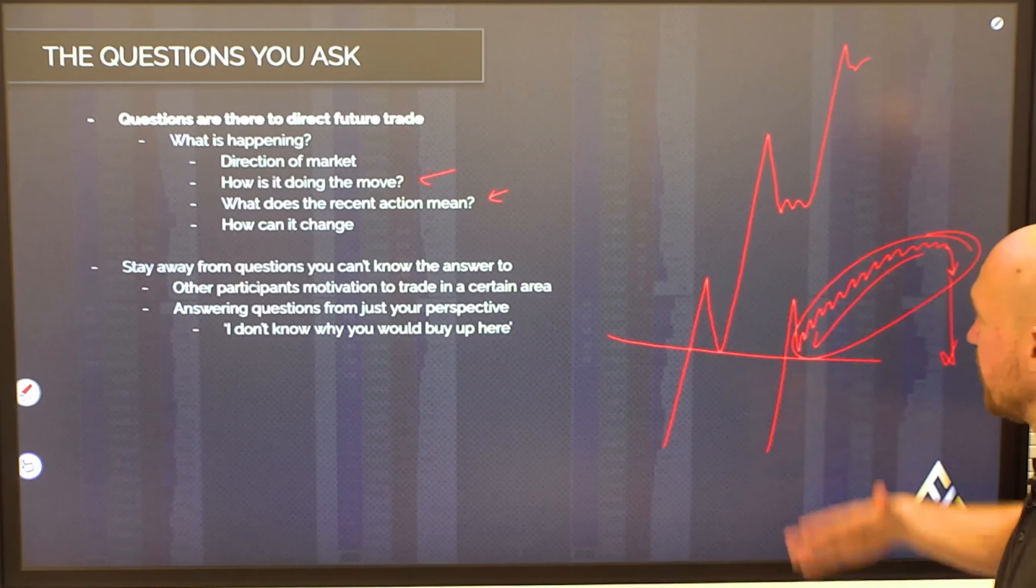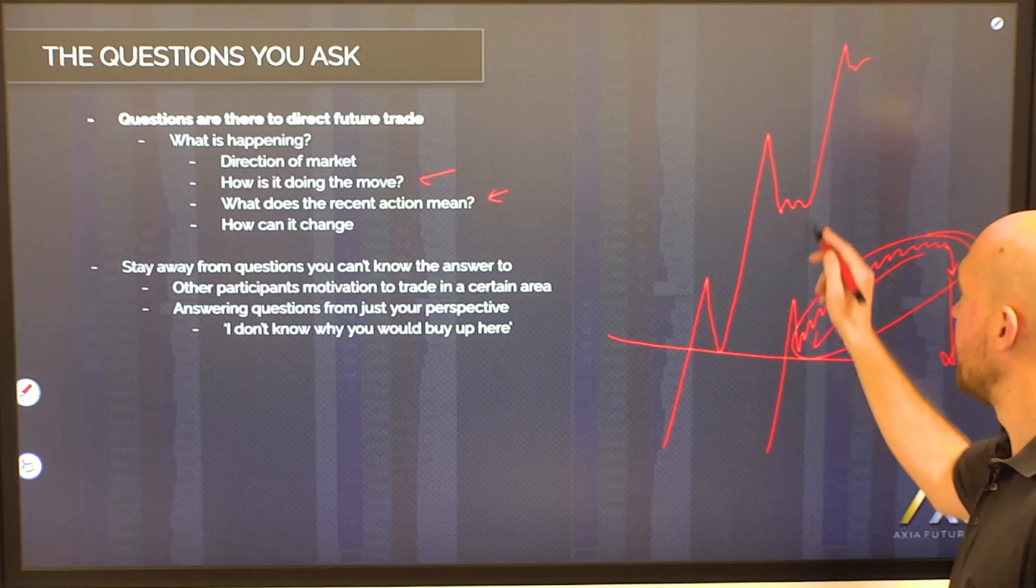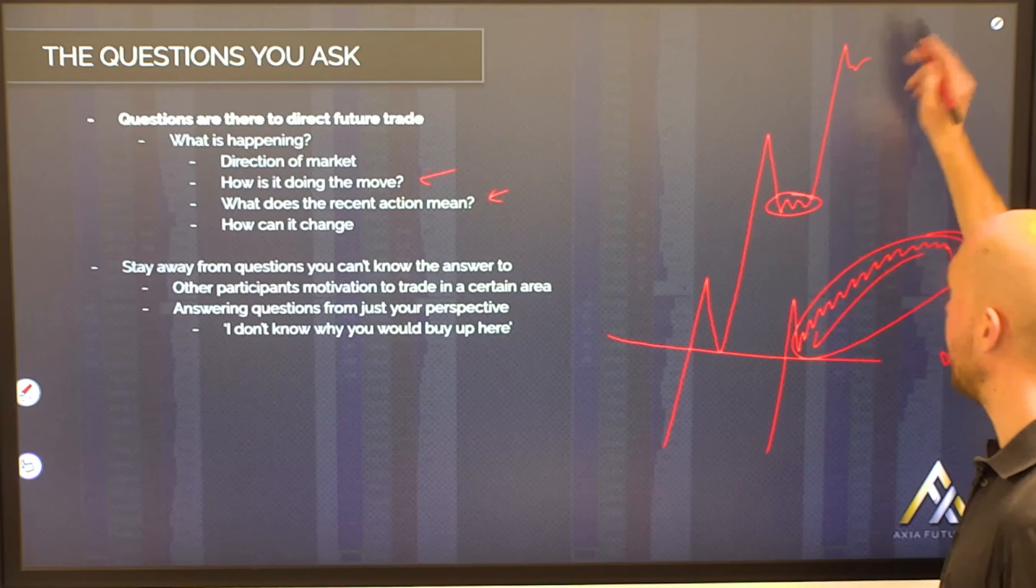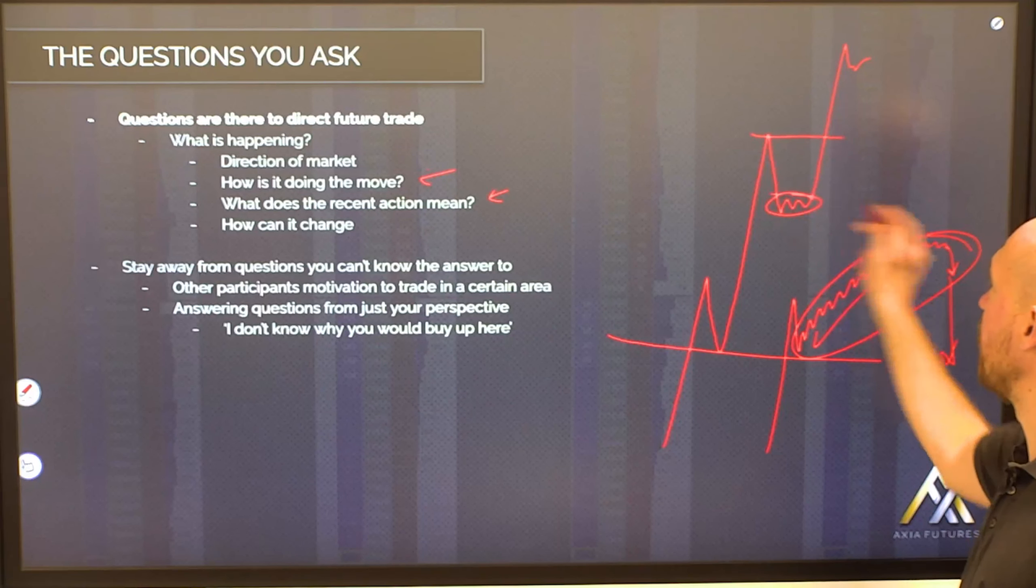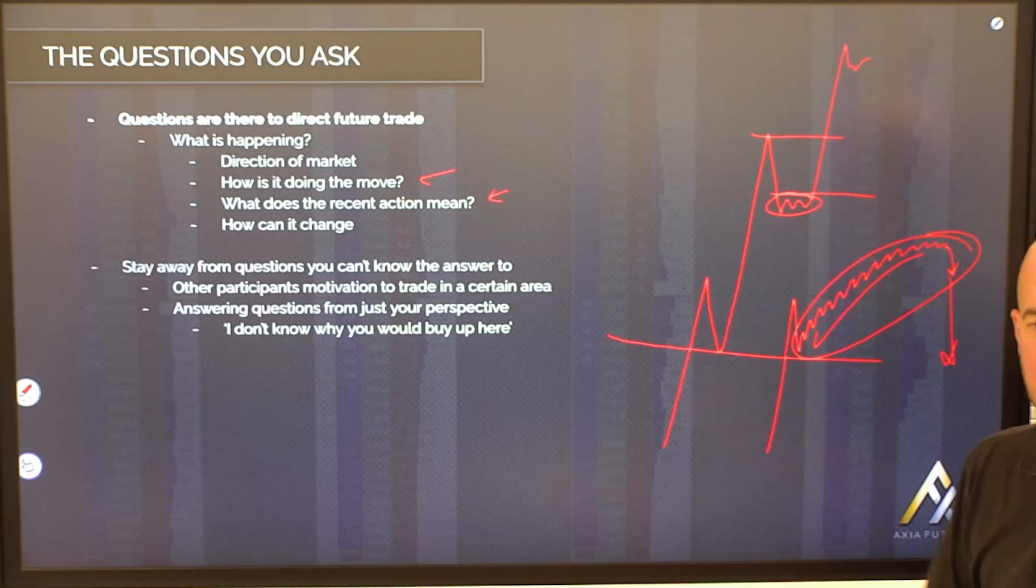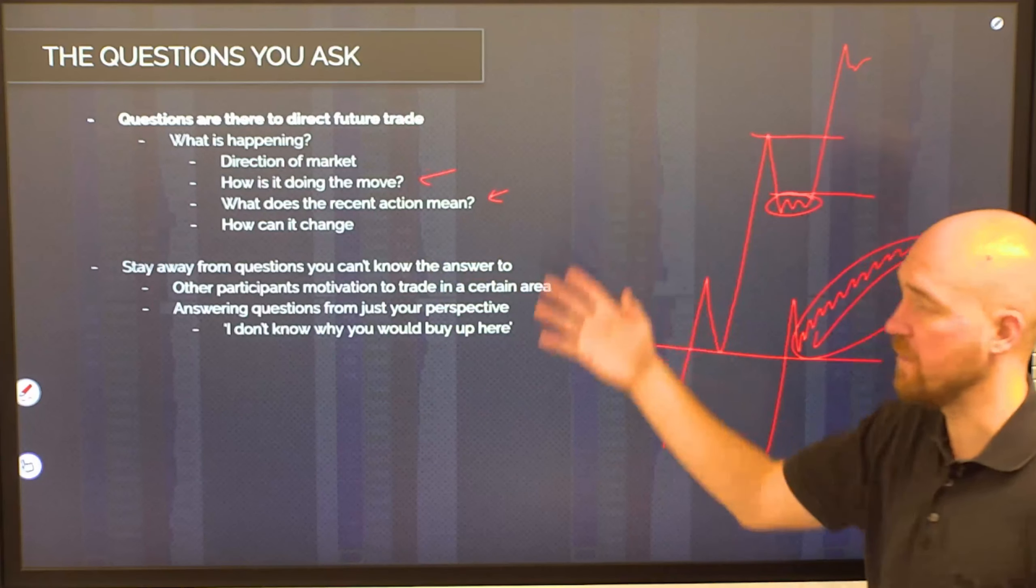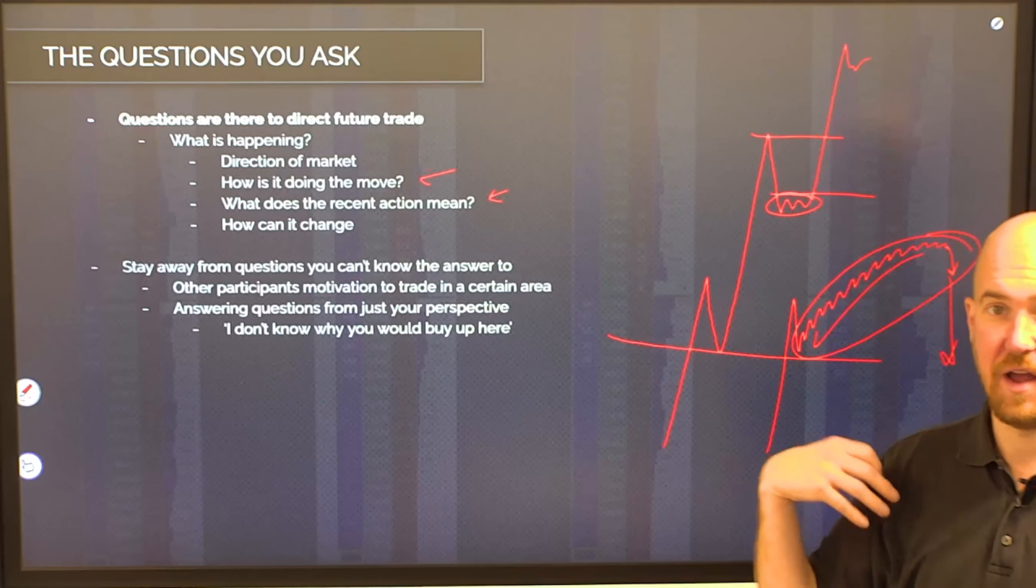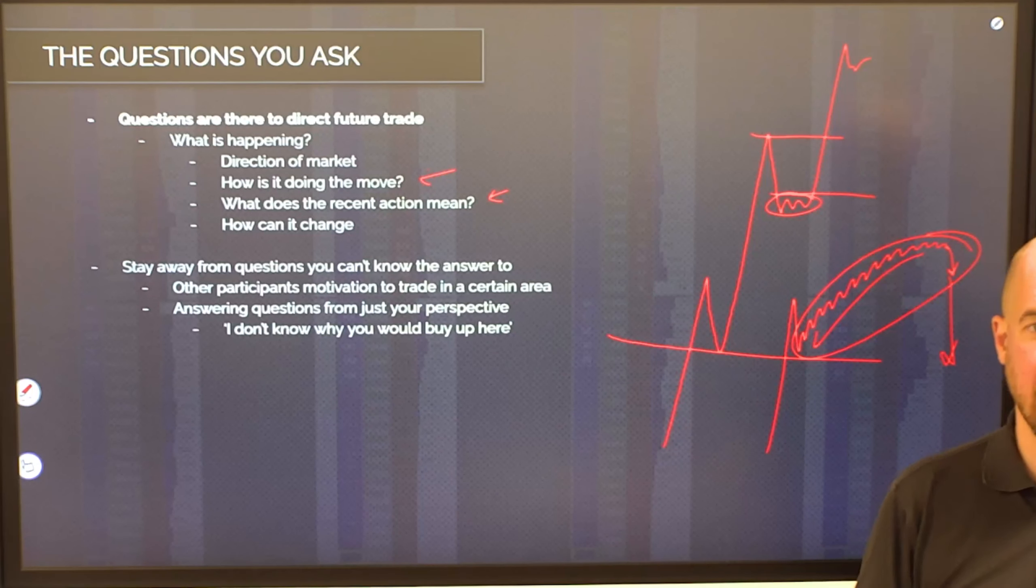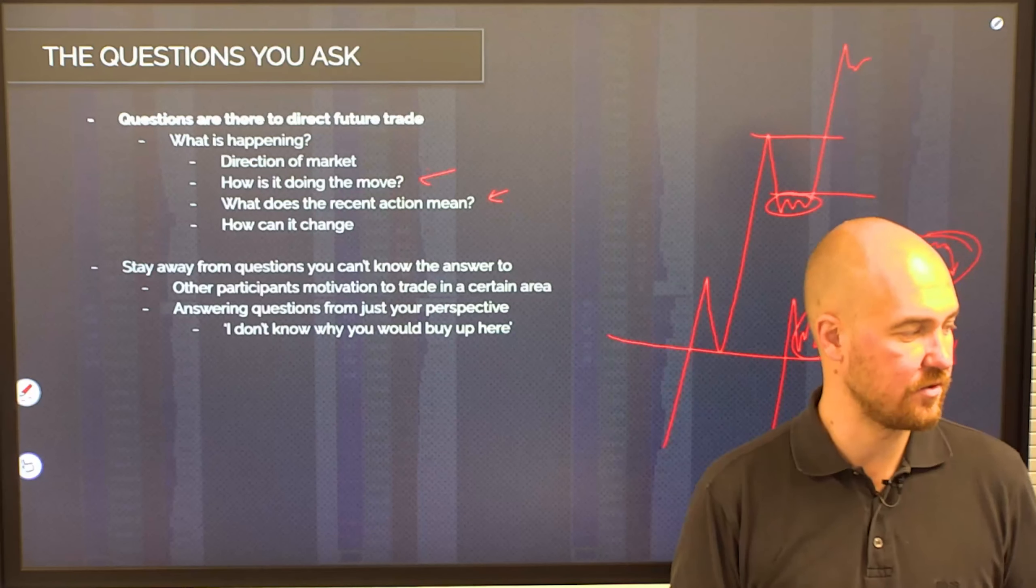Whereas a move like this, because it has moved up, built a foundation to move higher and gone again, may well find support at areas like this and find it harder to drop. So you get, in a sense, from the way your market does something, the way it moves, as to what it's going to do next and also how it is likely to do that.